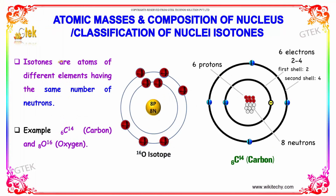Isotones and their classification: isotones are atoms of different elements having the same number of neutrons.